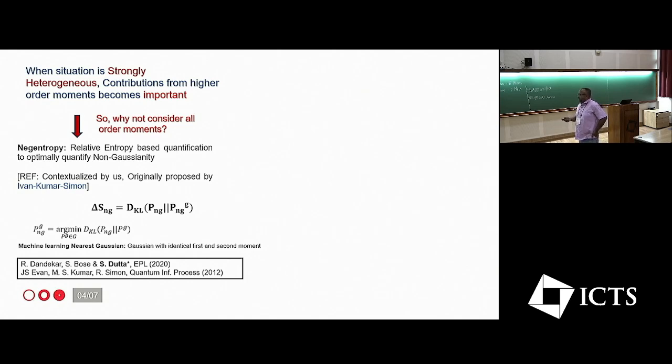The simplest possible measure that we have borrowed from this earlier work of Simon, Sanjay Kumar and Ivan. So they were looking into the non-Gaussian states, quantum optical states and they were computing the non-Gaussianity.